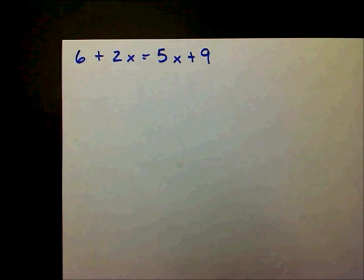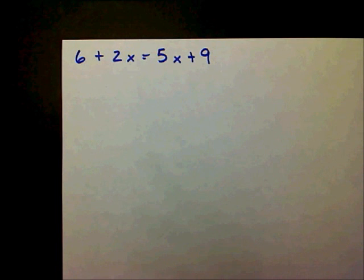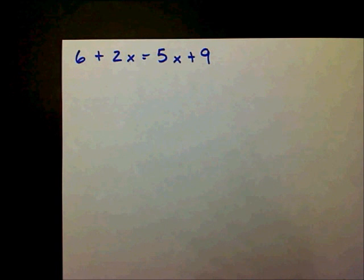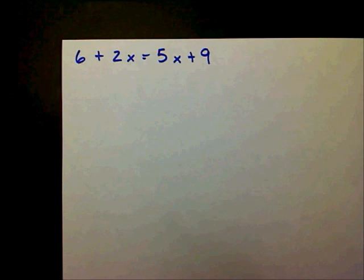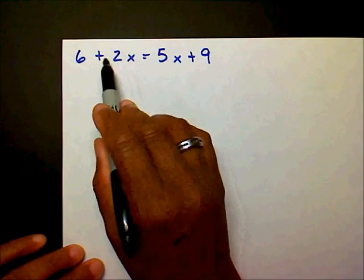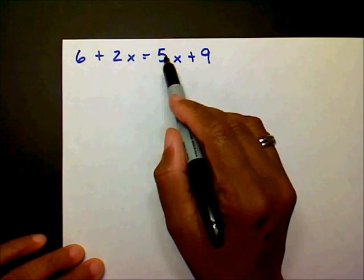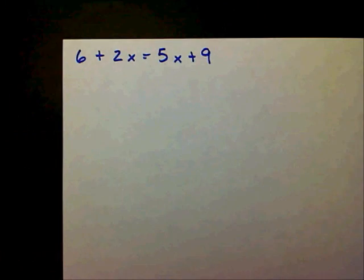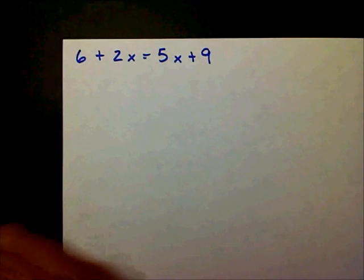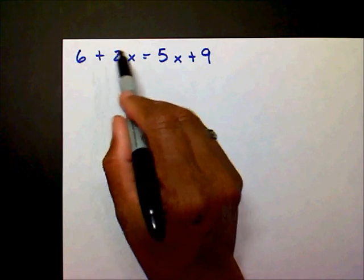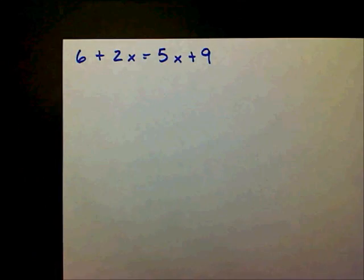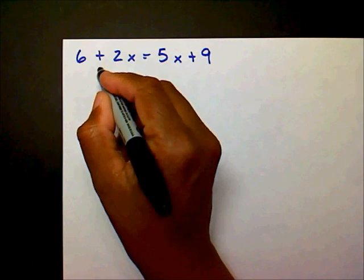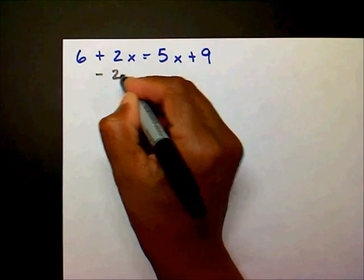In order to solve this type of problem, I find the term that has the smallest x coefficient. You have a plus 2x and a 5x. I'll move the 2x first — in order to remove this 2x, I'm going to subtract 2x on both sides, which is the opposite of plus 2x.